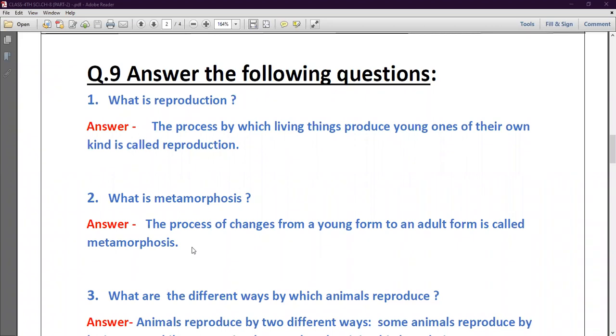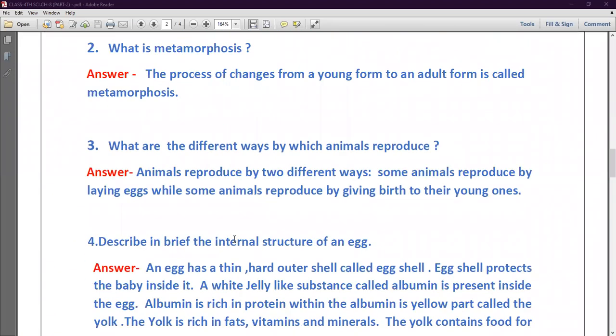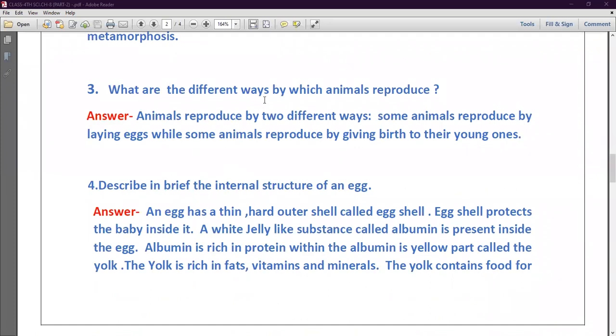Now third question is what are the different ways by which animals reproduce? So animals reproduce by two different ways. Some animals reproduce by laying eggs while some animals reproduce by giving birth to their young ones. Two ways animal they complete their reproduction process.